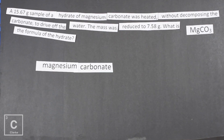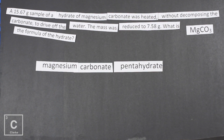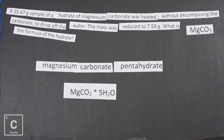The anhydrate is magnesium carbonate. When we consider that it's a hydrate with five water molecules, it's a pentahydrate. So the full name is magnesium carbonate pentahydrate. We would write that formula as magnesium carbonate followed by a dot or asterisk, then 5 H₂O. That shows our ratio: for every one molecule of magnesium carbonate, we have five molecules of H₂O.